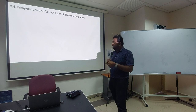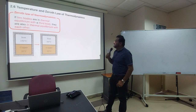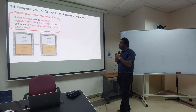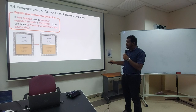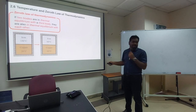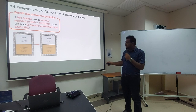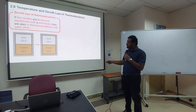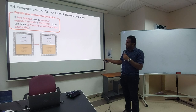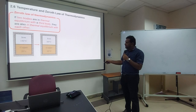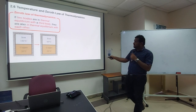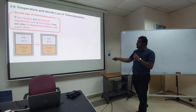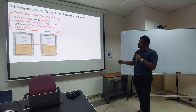The Zeroth Law of Thermodynamics states: if two bodies are in thermal equilibrium with a third body, they are also in thermal equilibrium with each other. For example, we have iron at 50 degrees Celsius and copper at 20 degrees Celsius. After some time, they come into thermal equilibrium, sharing the same temperature. Iron goes from 50 to 60 and copper absorbs heat and increases from 20 to 60. These two bodies achieve thermal equilibrium with each other.